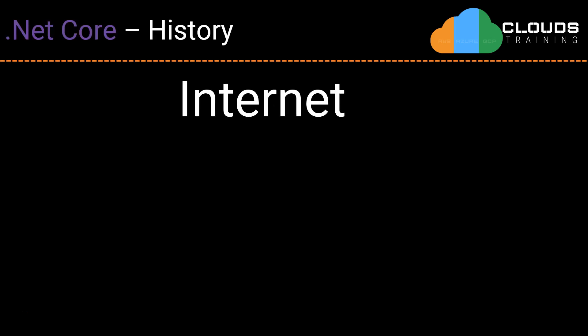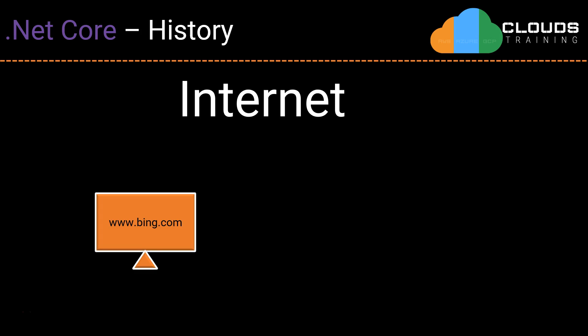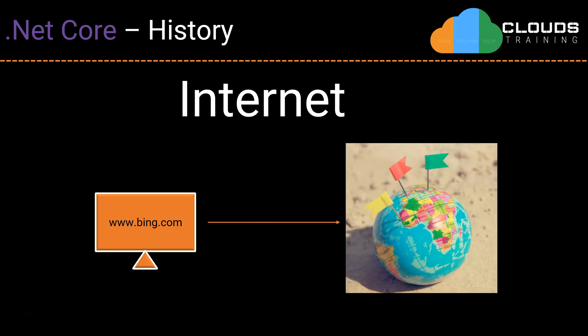Nowadays the term Internet is so popular that it is running across billions of devices around the world. When you think of the Internet, you may take a computer or a laptop and type a website address — let's say Bing.com, Google.com, or Facebook.com. When you hit enter and are connected to the Internet, the request is sent across the Internet. Let's pretend that this globe is the Internet — it is somehow processed, it understands what you requested, and it sends the content back to the browser on your local desktop or laptop.